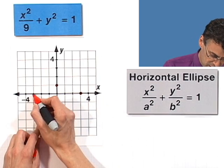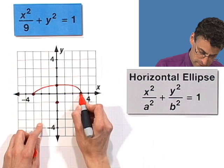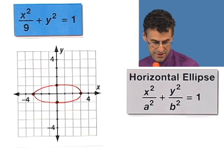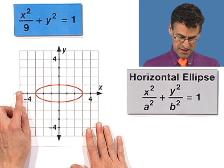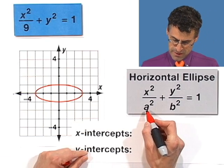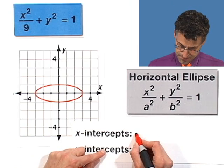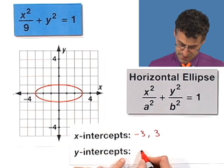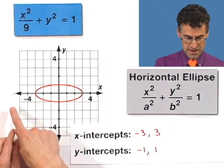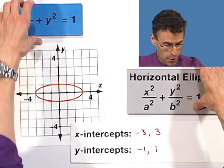So there's 3, there's A, and there's negative A. Drawing the beautiful ellipse, you can see it. So there's the ellipse. We can now give the X intercepts, which are plus or minus A, and the Y intercepts, which are plus or minus B. So the X intercepts are negative 3 and 3, and the Y intercepts are negative 1 and 1. It's a horizontal ellipse — you can see that because the major axis is along the X axis.